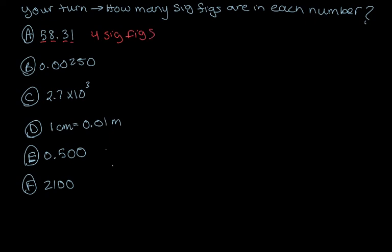For B, we have leading zeros — zeros to the left of the first non-zero number — so they are not significant. Then we have two non-zero numbers, and then we have a trailing zero, a zero that comes to the right of a non-zero number after a decimal point. So in this case, we have three sig figs.